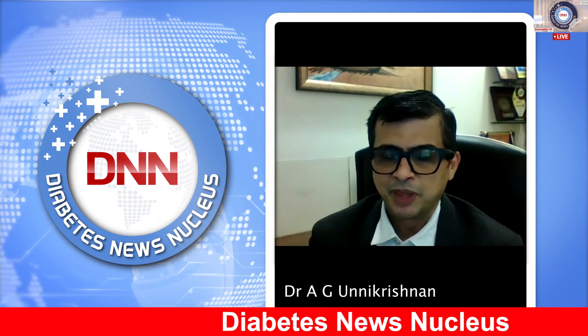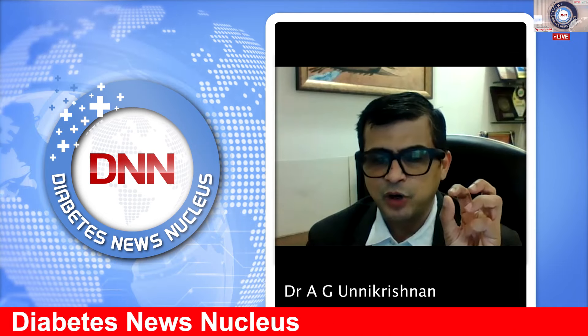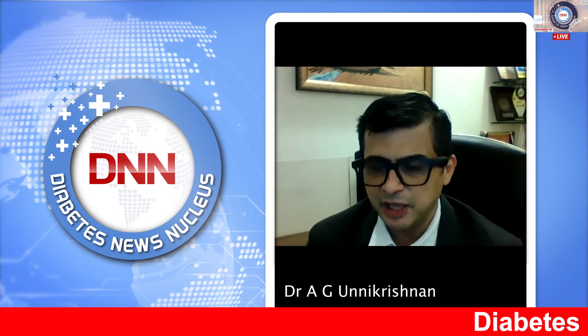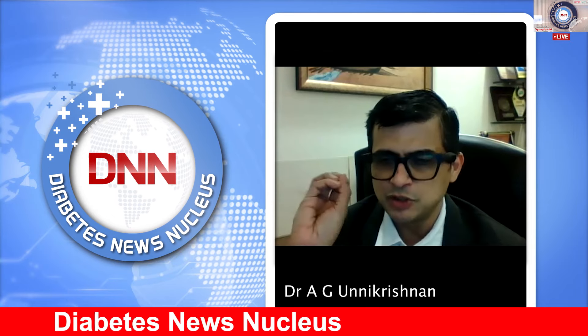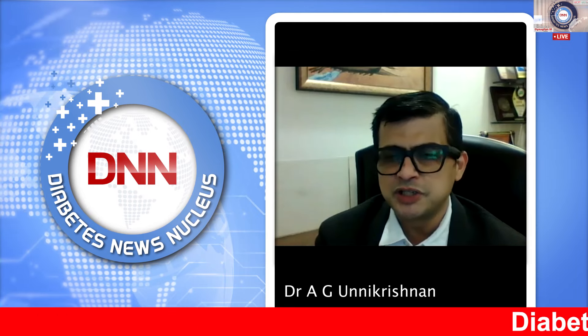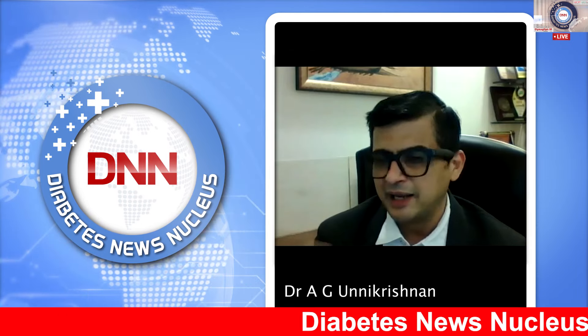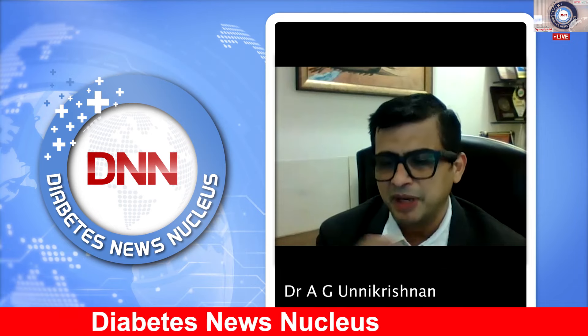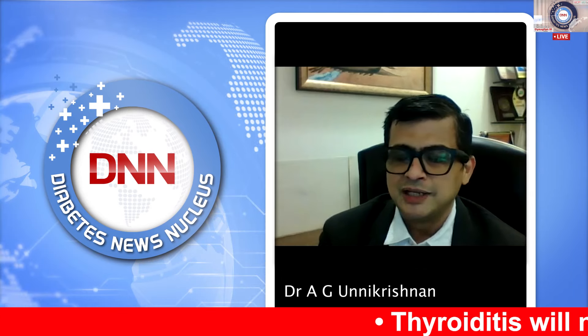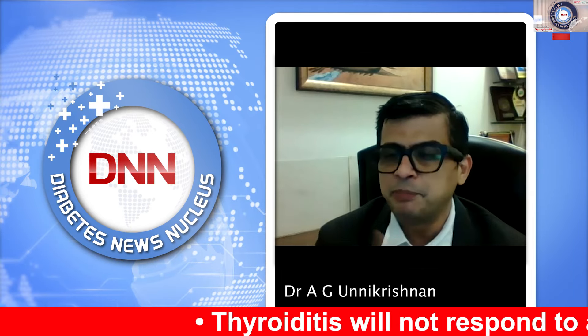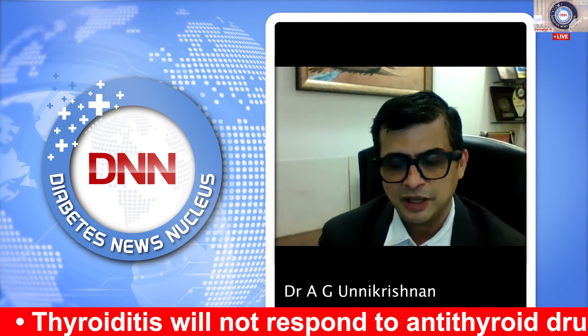Whereas if it is Graves' disease or toxic nodular goiter, where the gland is making more hormone, it will light up. So whether it is a thyroid gland making hormone — hyperthyroidism — or a thyroid gland leaking hormone — thyroiditis — can be picked up by a nuclear scan. Of course, in some situations like pregnancy you cannot do a nuclear scan, but you can make a clinical diagnosis.